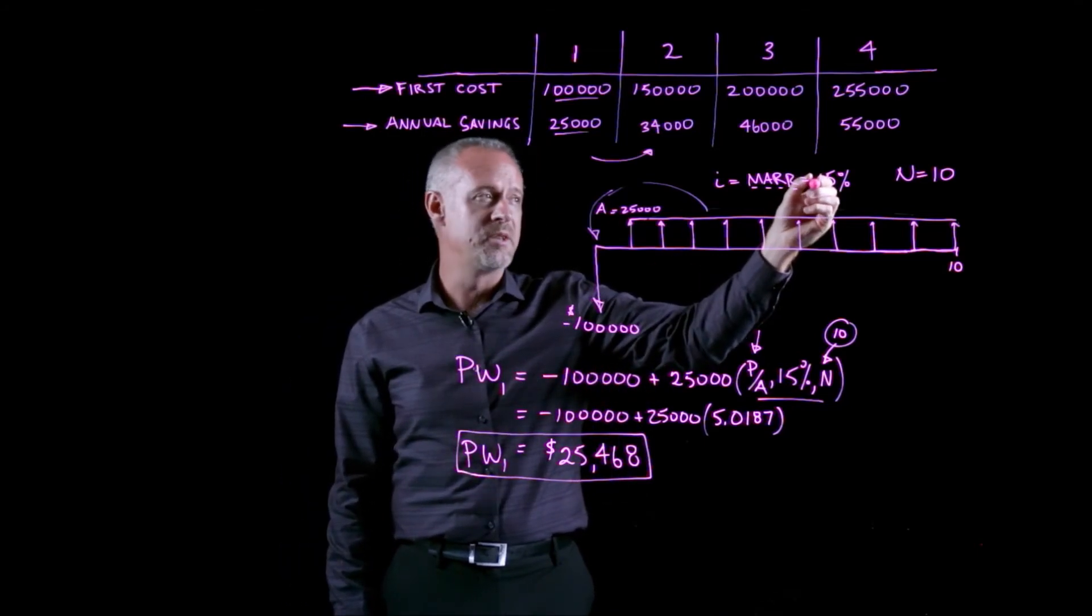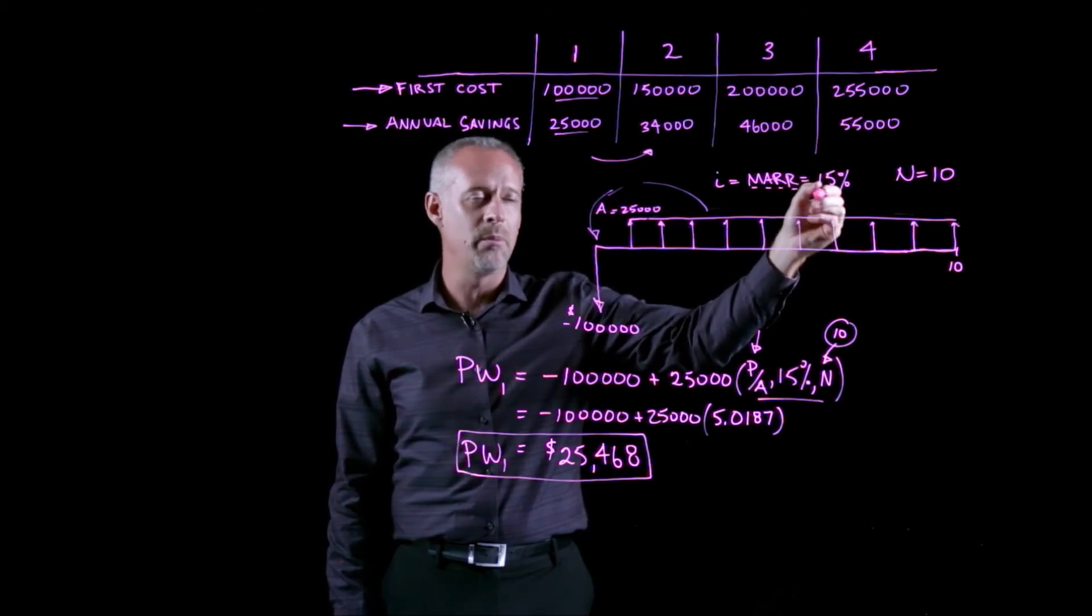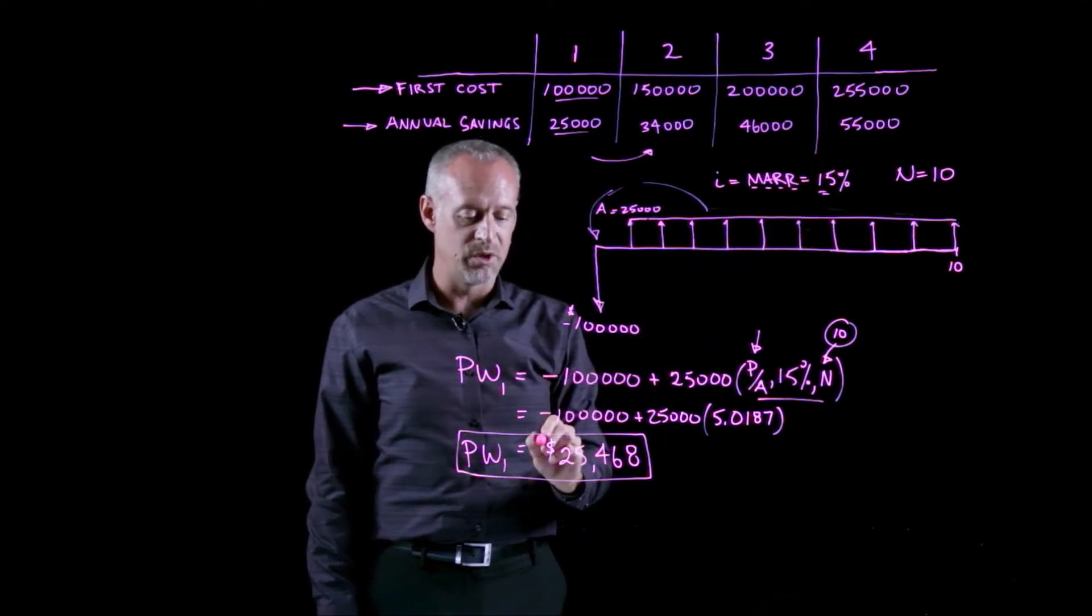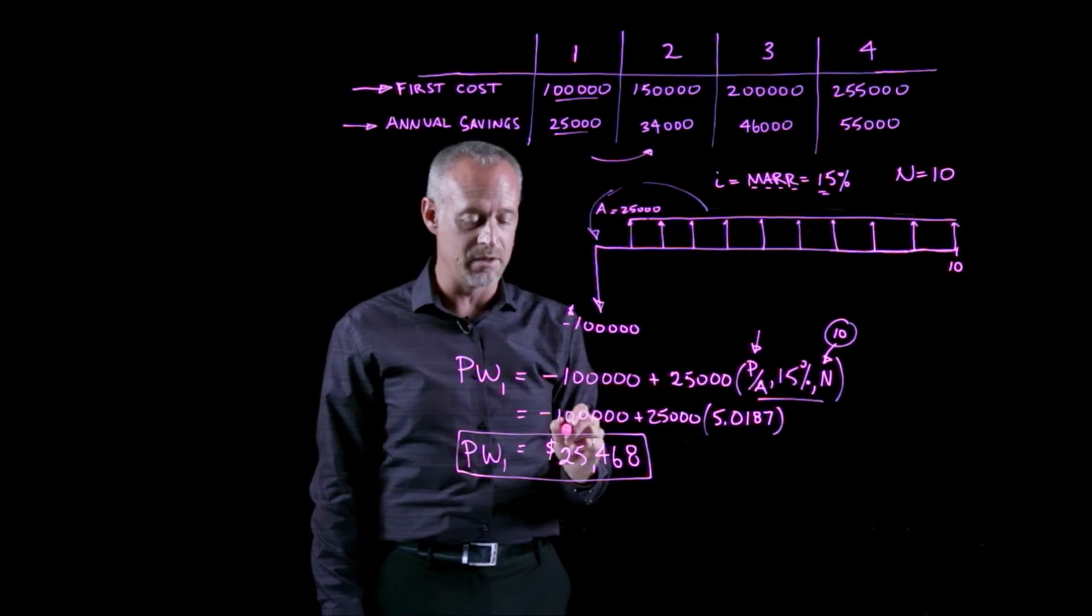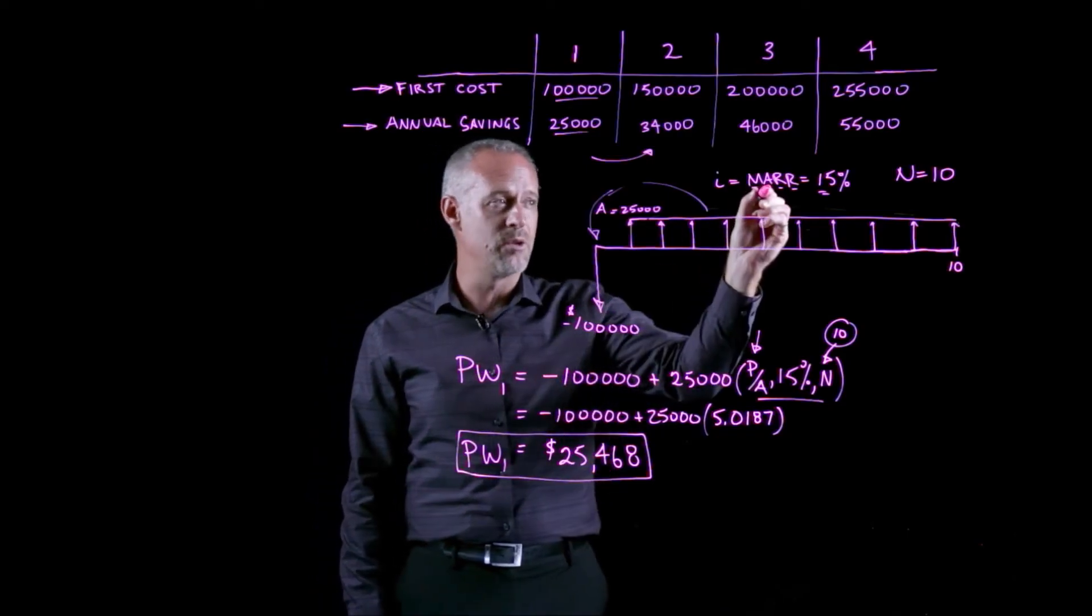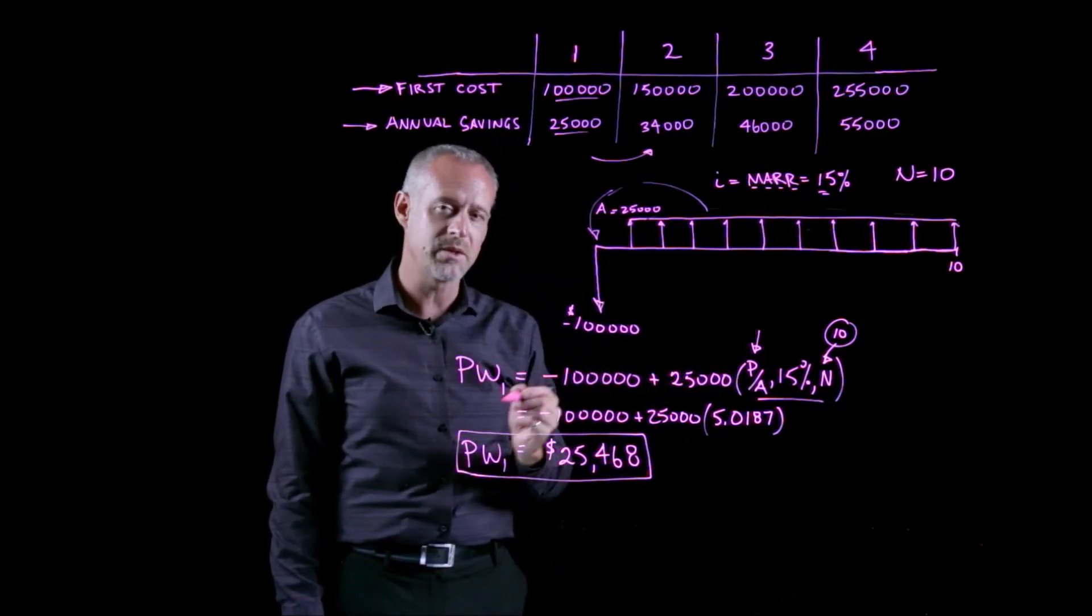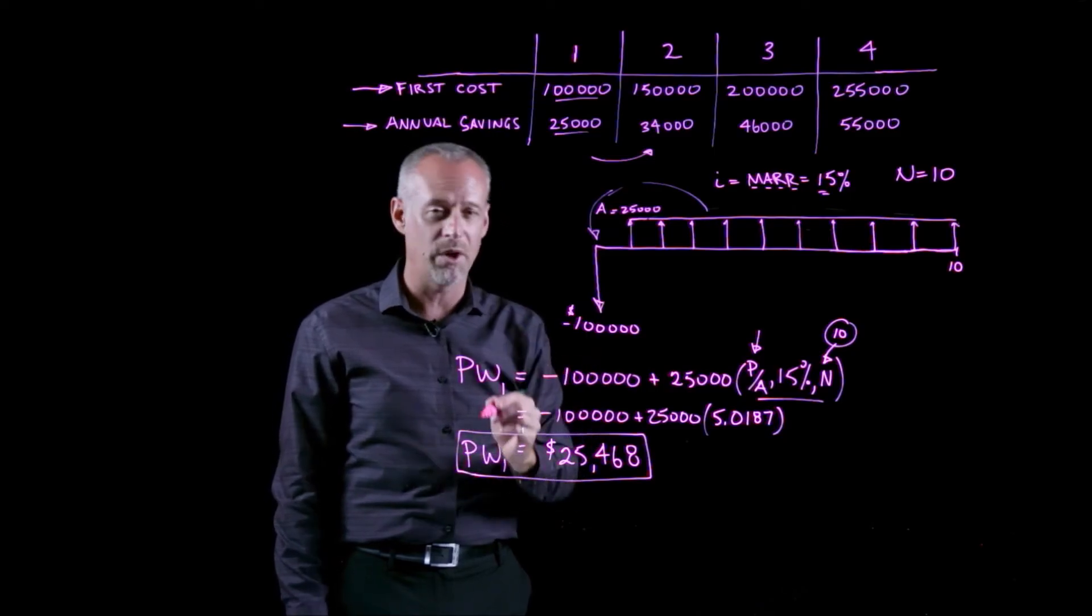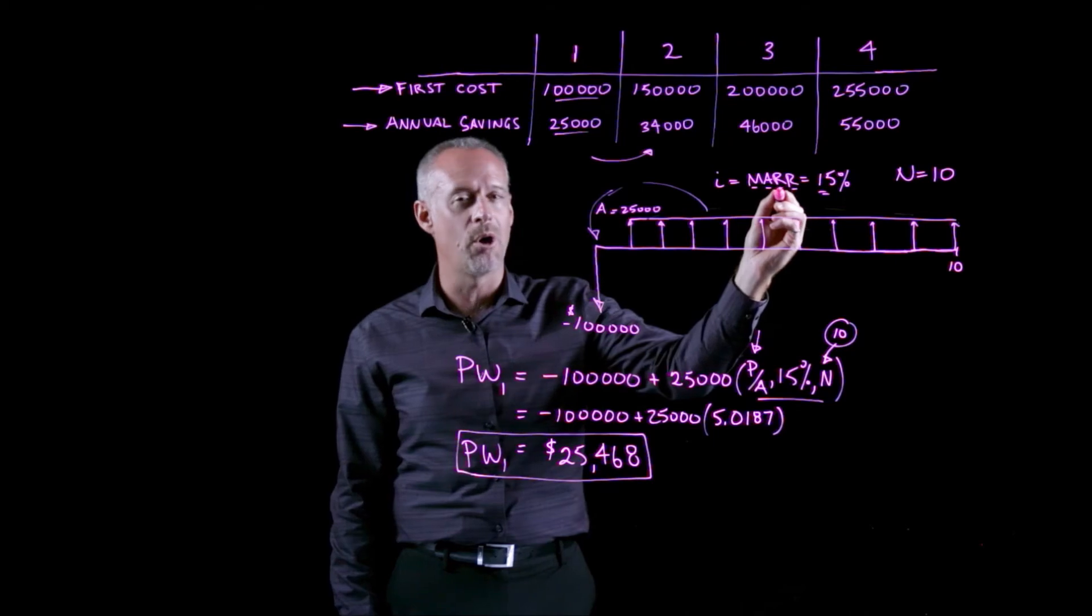So I could keep increasing this number, this MAR, until I get to 18%, 20%. At some value of the MAR, this investment turns negative. That means it's not attractive anymore. That means it doesn't earn at least the value that is the minimum attractive rate of return for the company. That's the best way to think about how this present worth method of analysis works and how to interpret the MAR.